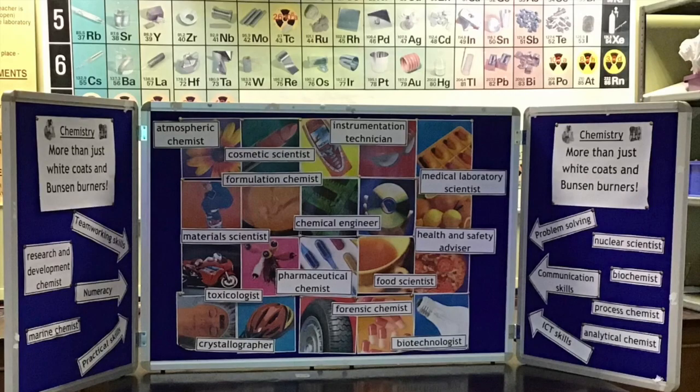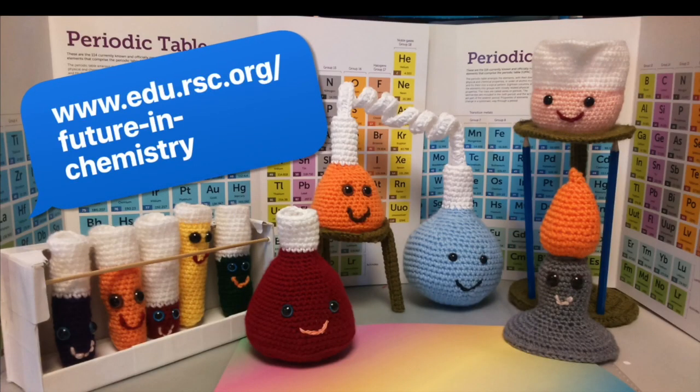This is the board that I would normally use at an options evening, highlighting some of the skills that pupils will develop during National 4 and National 5 chemistry and some of the careers that chemistry can lead them to. The Royal Society of Chemistry has an excellent web resource looking at careers in chemistry, and if pupils have any questions at all, they should speak to their teacher.